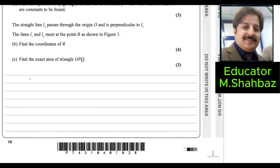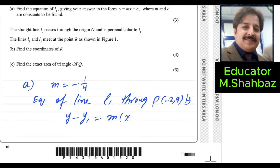With gradient equals minus 1 over 4 found, we can write the equation of line L1. You can choose either point P or Q; here we choose P. Using y - y1 = m(x - x1), substitute y1 = 9, m = -1/4, and x1 = -2. The two negatives make plus, giving x + 2.